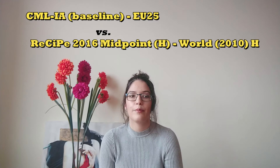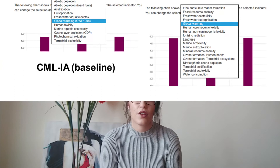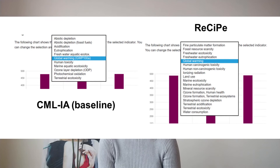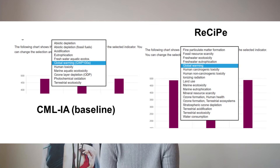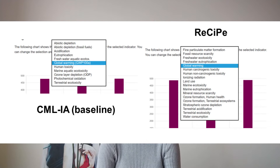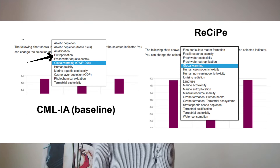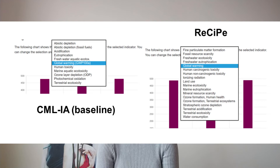For a single item, I analyzed the difference in impact categories. CML exhibits 11 indicators while ReCiPe exhibits 18, which is already an advantage over the CML method. We have a higher number of indicators and in some cases it involves subdividing one category into two or more. For example, CML uses the term Eutrophication, while in ReCiPe this is divided into freshwater and marine eutrophication. Another example is human toxicity, which in ReCiPe is subdivided into human carcinogenic and non-carcinogenic categories.